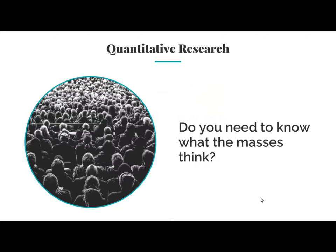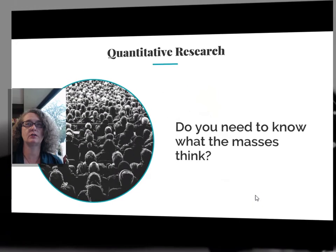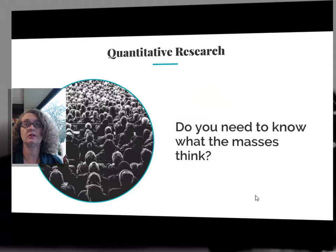One of the first decisions you face is whether to use a quantitative or qualitative approach. The distinction this textbook offers between quantitative and qualitative research is, I think, brilliant. I like it because they don't begin with a value judgment about one type of research being better than the other. Rather, it is tied to a decision about the nature of the question you are trying to ask. As shown on this slide, if you're asking a question that requires you to know what the masses think about something, you use quantitative methods.